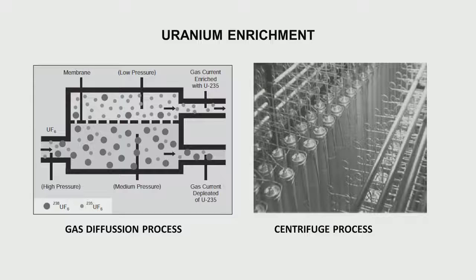The enrichment process consists of two methods: the gas diffusion process and the centrifuge process. The gas diffusion process uses the principle of diffusion and has been quite effective. The centrifuge process uses centrifugal force with centrifuges running at about 70,000 RPM, wherein uranium-235 and uranium-238 get separated and enriched uranium is extracted. However, the centrifuge process is quite power-intensive, which is why many countries have not been able to proceed with it.